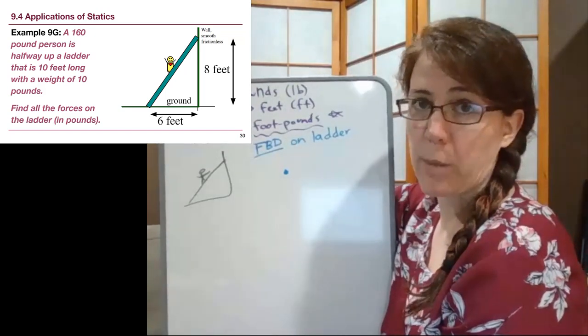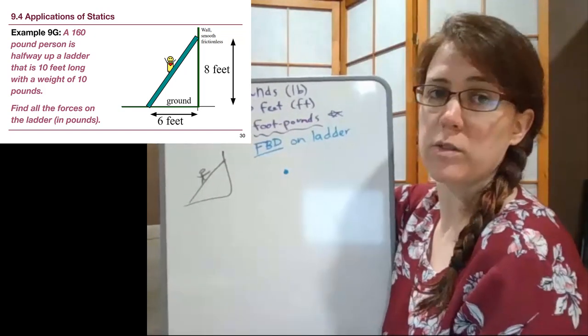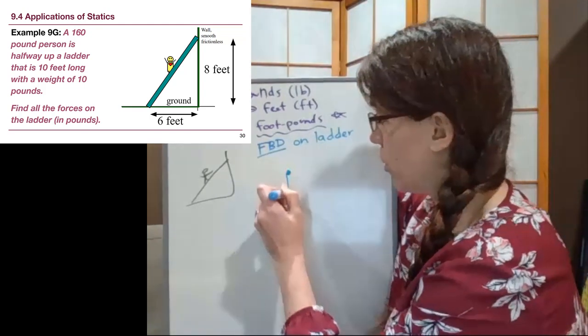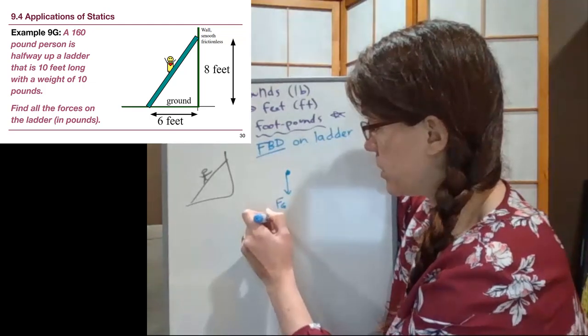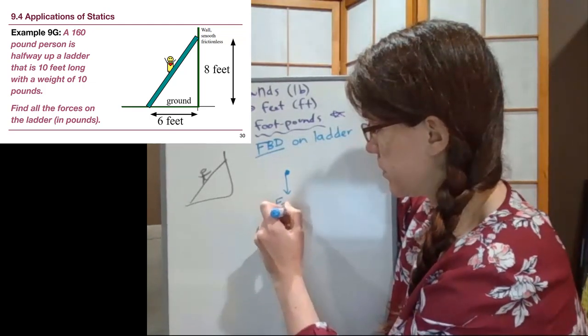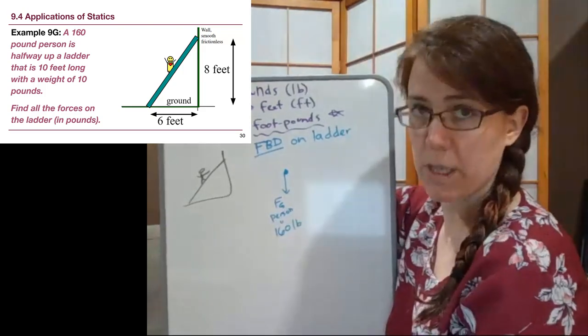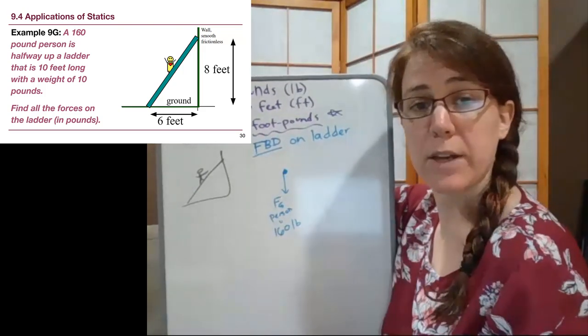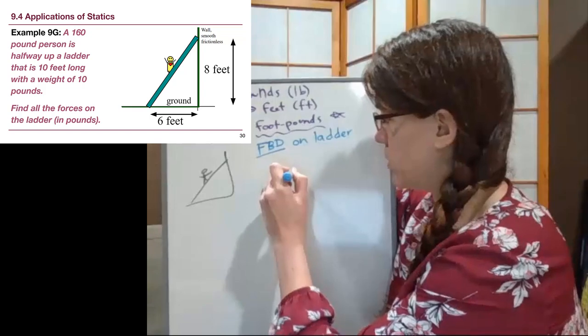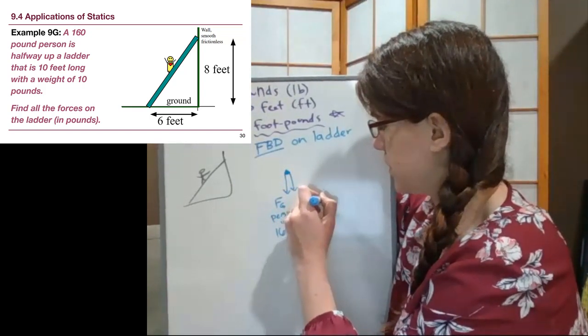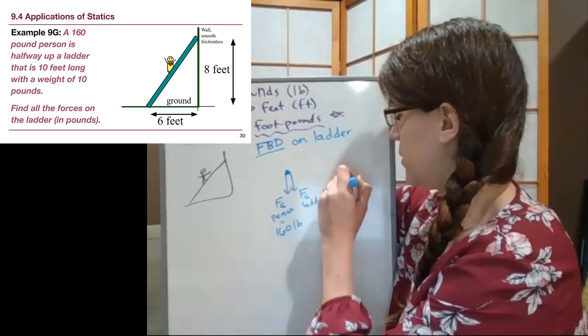The ladder is our object of reference. As with all free body diagrams, we just have all the arrows coming from a point. The first thing we can do is work with the numbers given to us. We're told about a 160-pound person, so that is the force of gravity of the person - 160 pounds. The ladder has a weight of 10 pounds, so Fg of the ladder is 10 pounds.